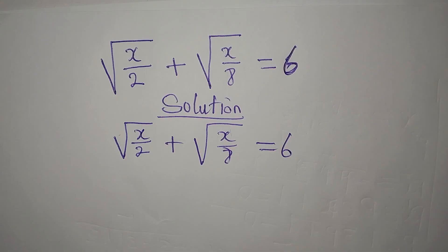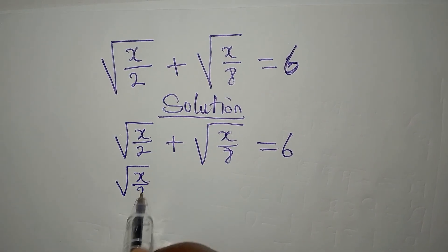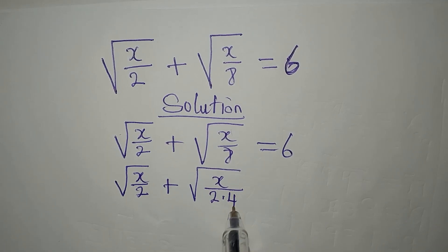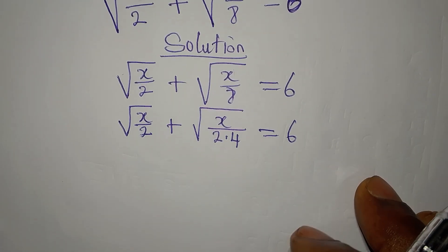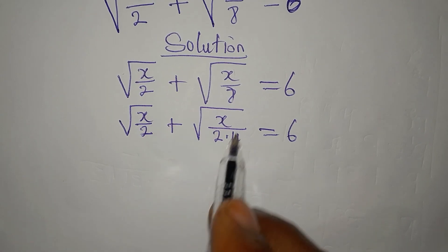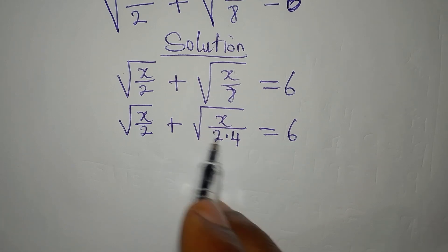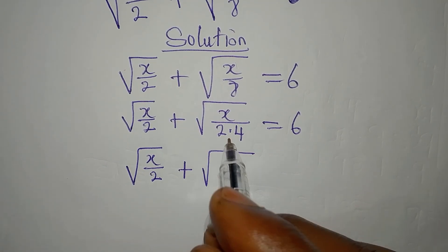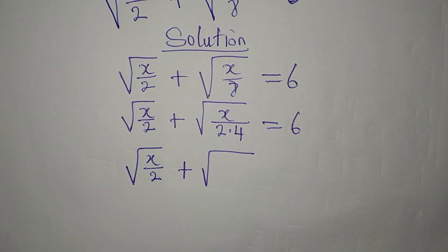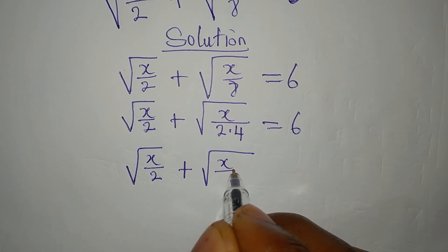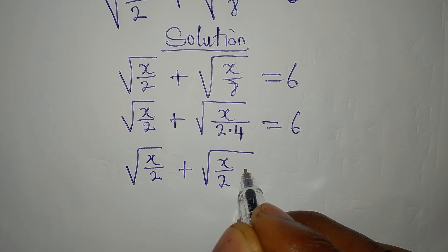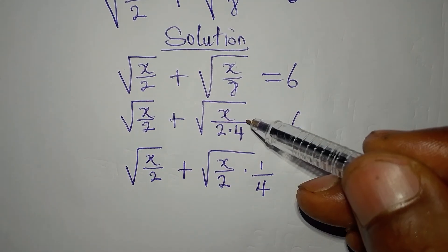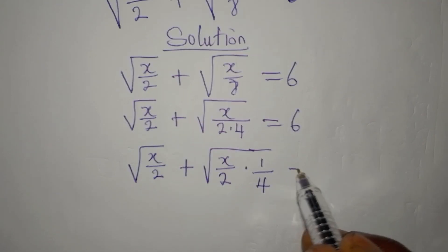So if we do that, we're going to have the square root of x over 2 plus — from here, x over 8 is 2 times 4. Now the next thing we're going to do is decompose this to get the two partial factors, and that will be x over 2 multiplied by 1 over 4. Because if you put these two together you get x over 8, and everything is still under the square root sign, and this is equal to 6.